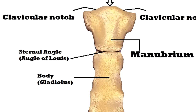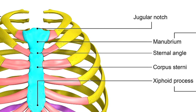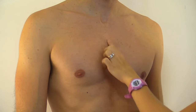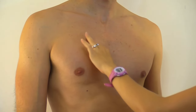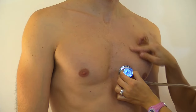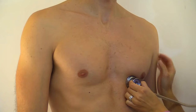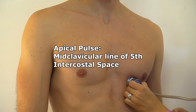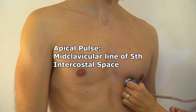The manubrium attaches to the body of the sternum at a transverse ridge forming the sternal angle, also known as the angle of Louis. This is the point where the second pair of ribs attach to the sternum with an articulation at the partial facet on the manubrium and a partial facet on the body. This sternal angle is an important landmark for nurses and other healthcare professionals because it helps locate and identify the intercostal space of each rib, which is helpful when locating the apical pulse or for listening to heart or lung sounds during assessments. The apical pulse, for example, is located at the midclavicular line of the fifth intercostal space.